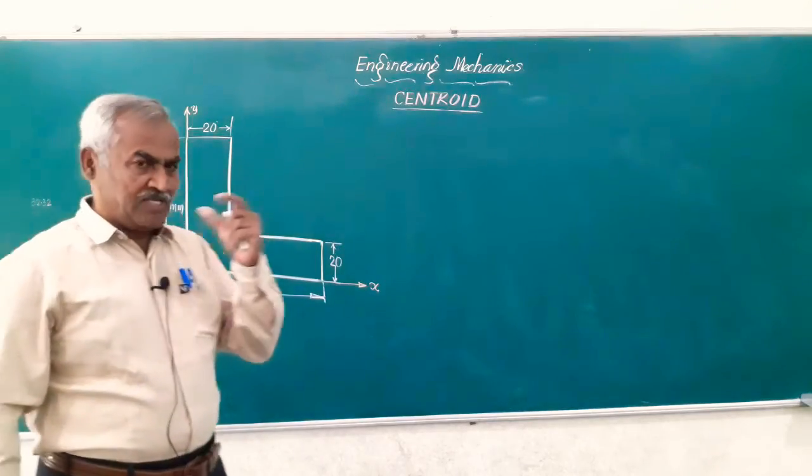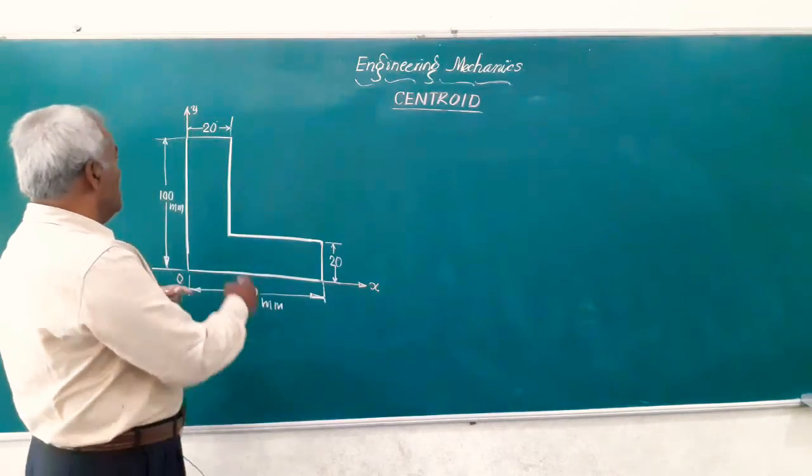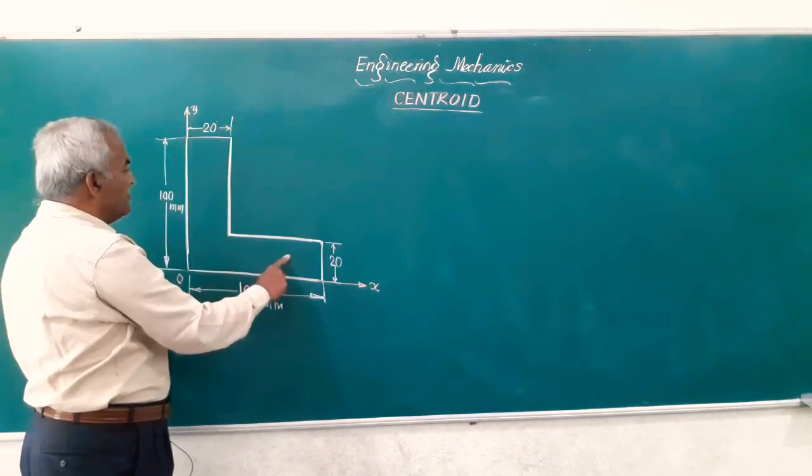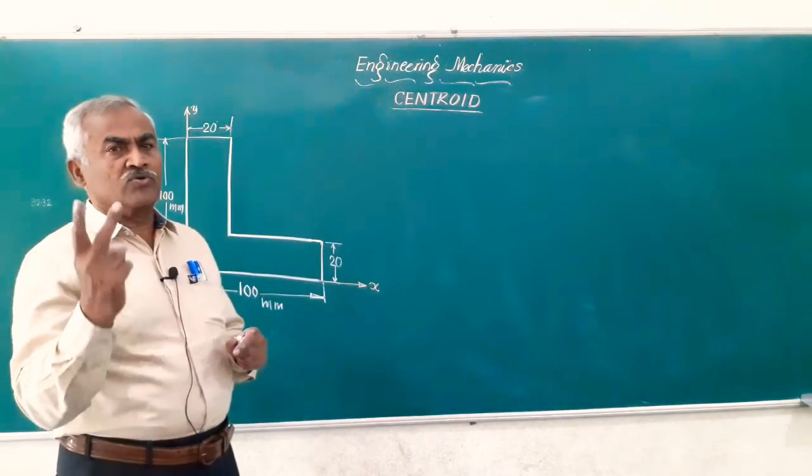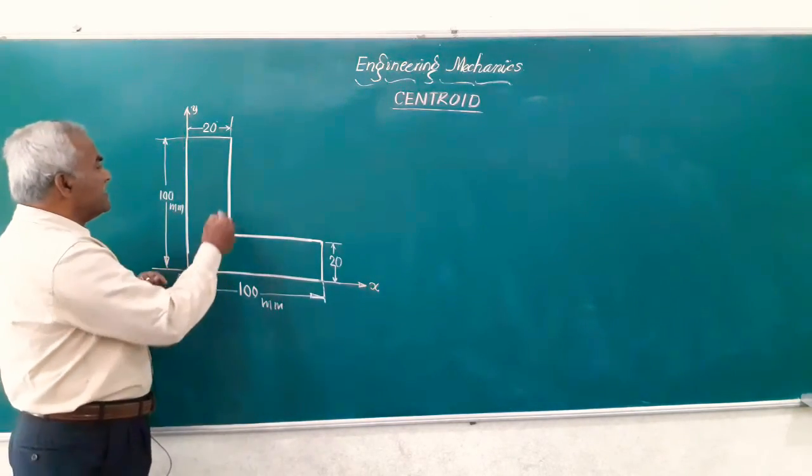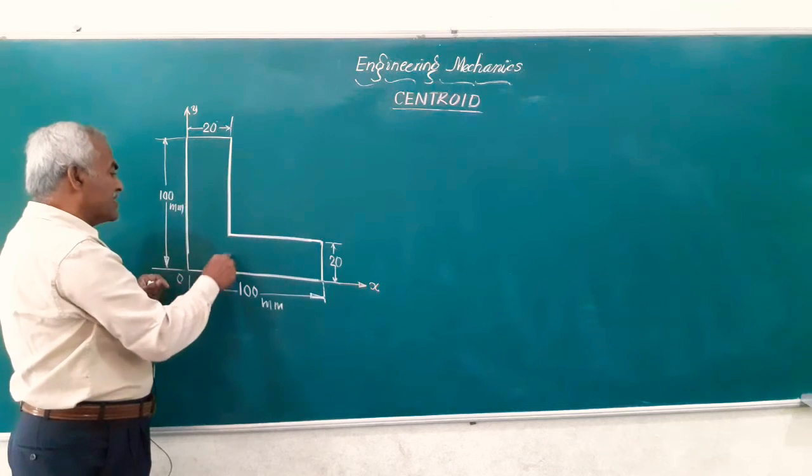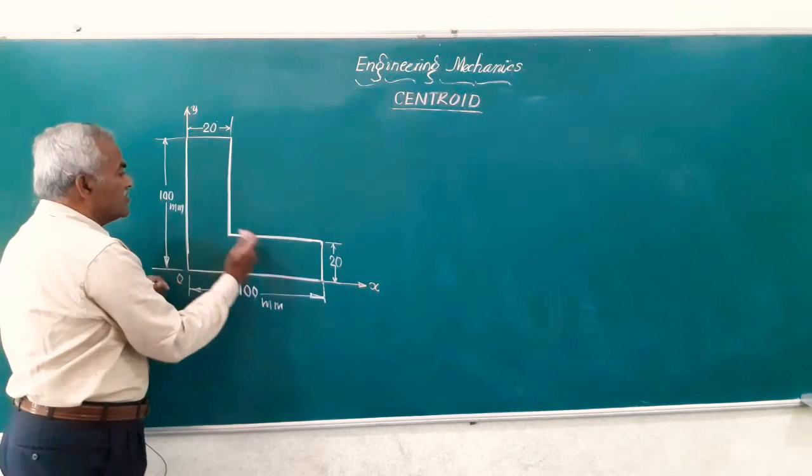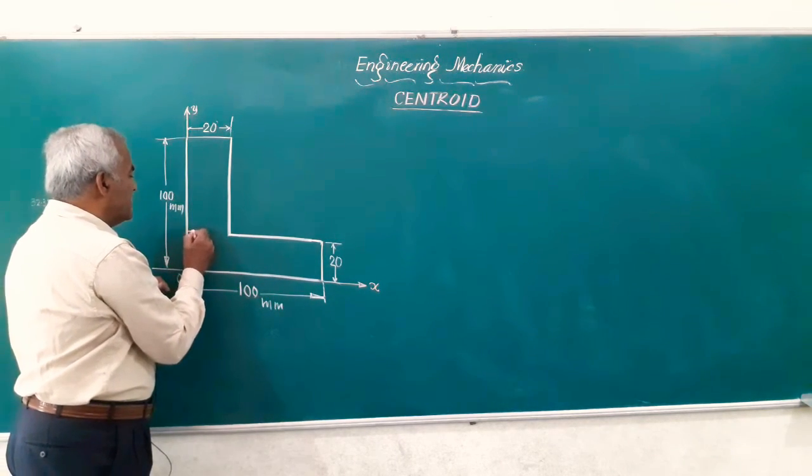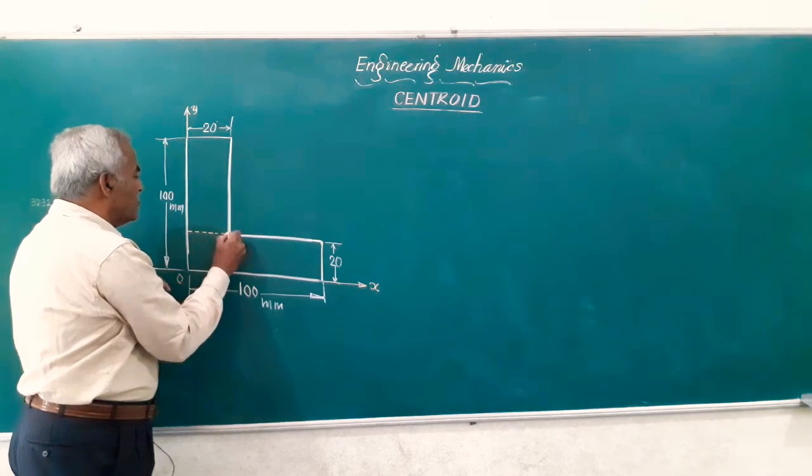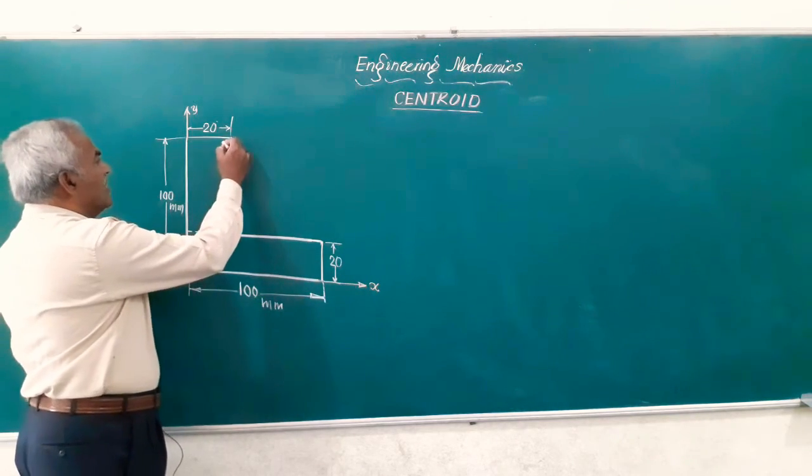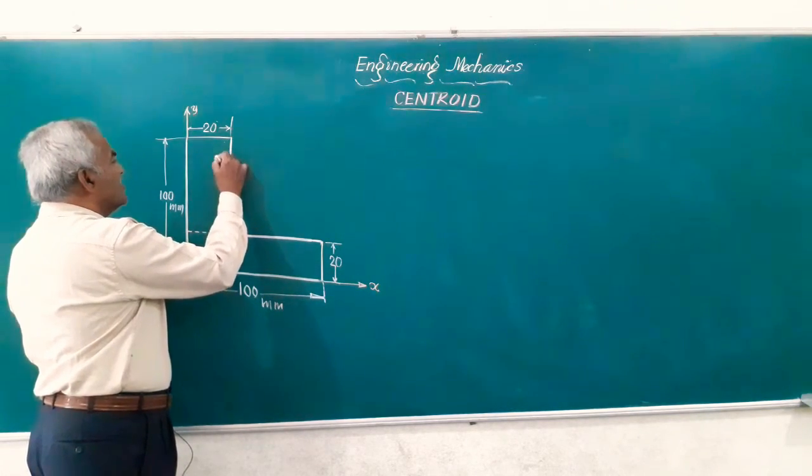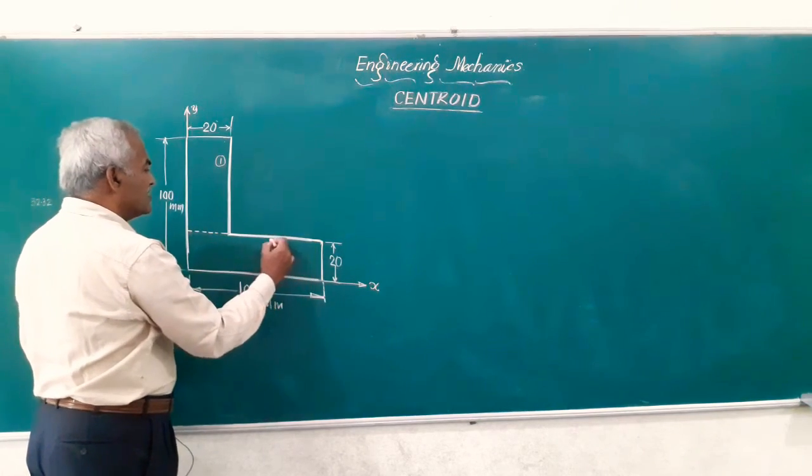Friends, in this section we have got an L-shape which can be split into two rectangles. Splitting can be done either in the vertical direction where you will get one and two rectangles, or it can be done by drawing a horizontal like this and this is we can call as number 1 and this is section number 2.